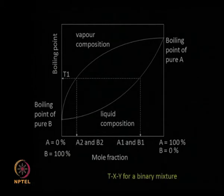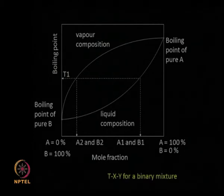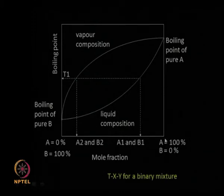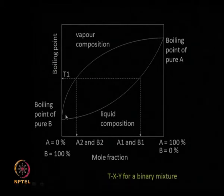The T-x-y diagram is a useful diagram — at any temperature you can draw horizontal lines and read the composition of A and B in both the liquid and vapor phases. The VLE diagram does not bring in temperature but just shows the compositions. In this particular figure, A is a heavy material (higher boiling point) and B is a light material (lower boiling point), so more B is found in the vapor and more A is found in the liquid.